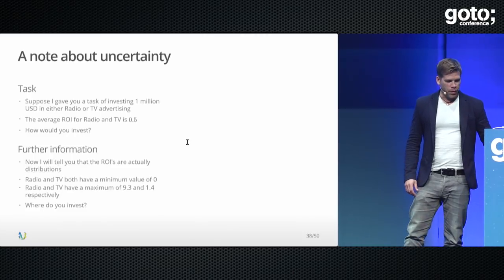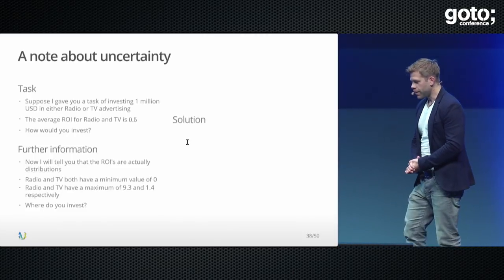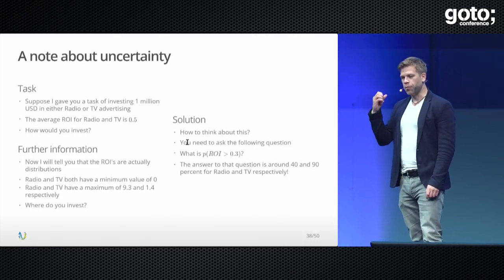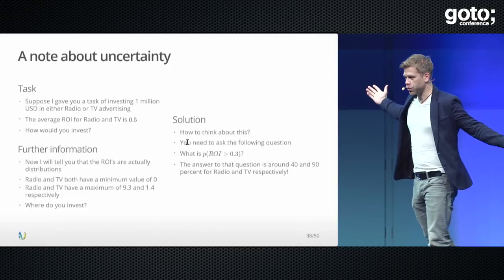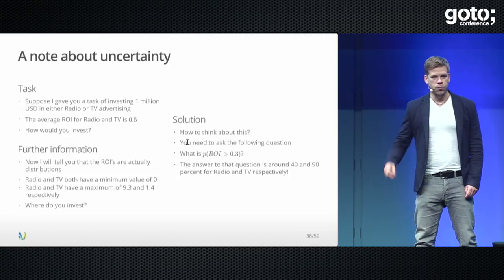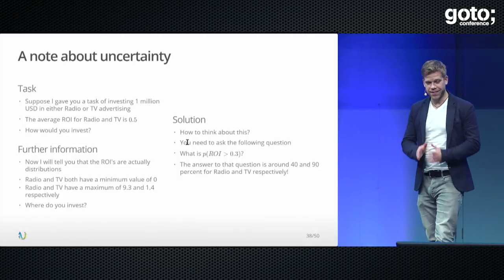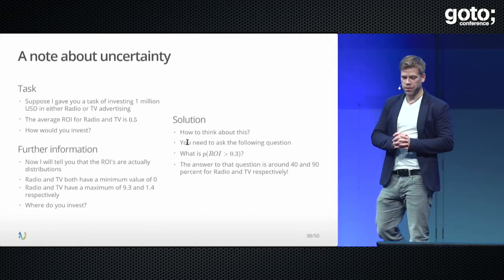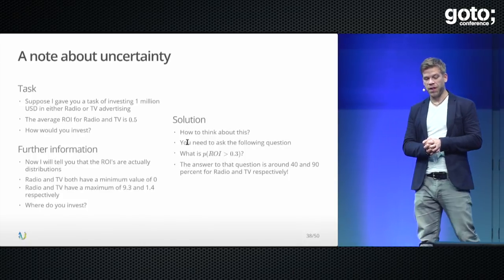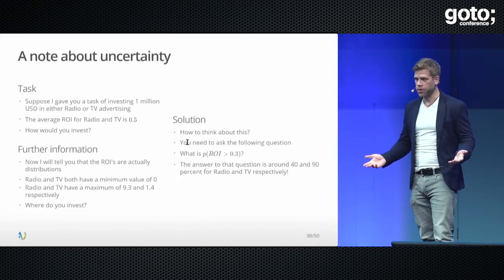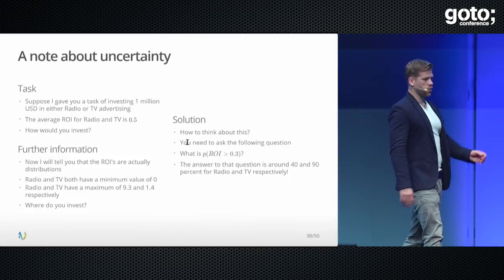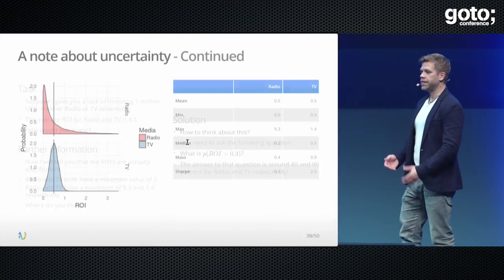To answer this properly, you have to ask: what is the probability of me realizing an ROI greater than 0.3? With that specified question, the answer is about 40% probability for radio and about 90% for TV. How does this work when radio had the higher historical maximum and they have the same average? Because things are distributions — and they are not Gaussian. Nature makes no such promise.